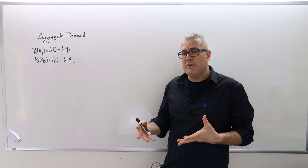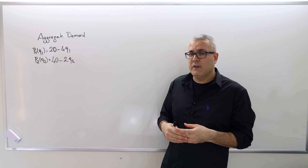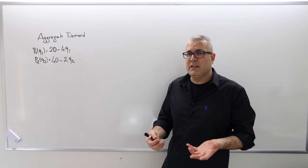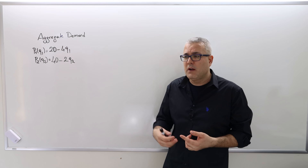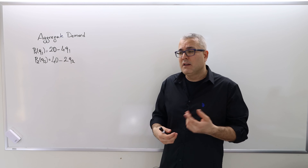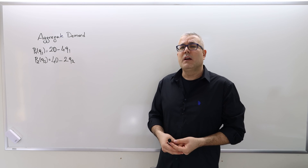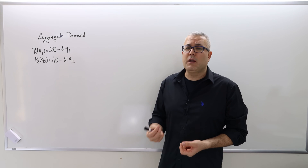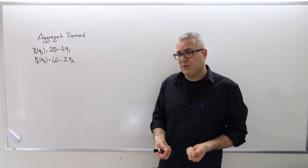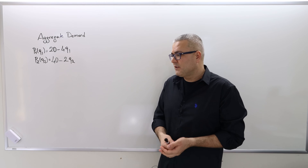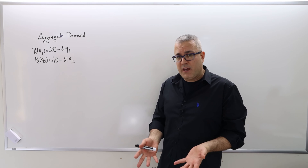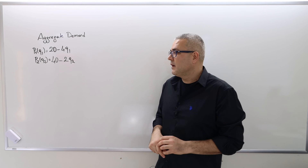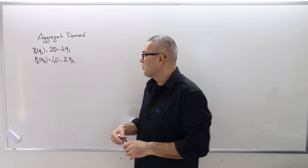Once you find the aggregate demand curve, it may no longer be linear. And that's the problem, because a nonlinear and non-differentiable demand curve makes it difficult to solve the profit maximization problem. For that reason, it's okay to just add up the demand curves for this intermediate microeconomics course.